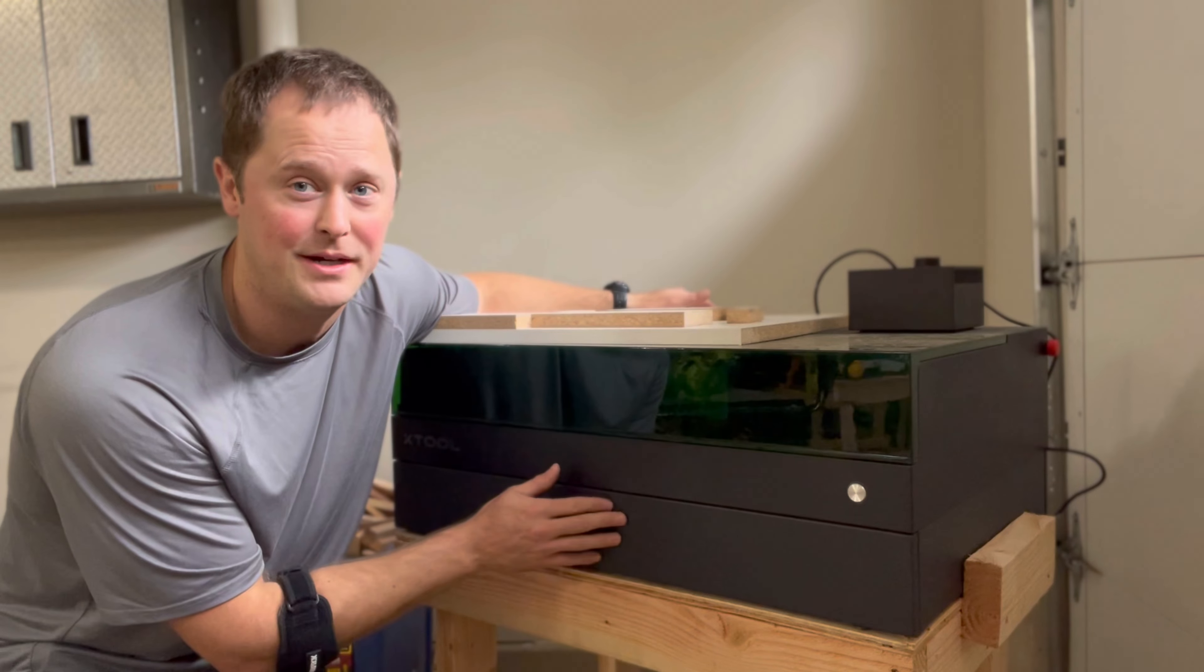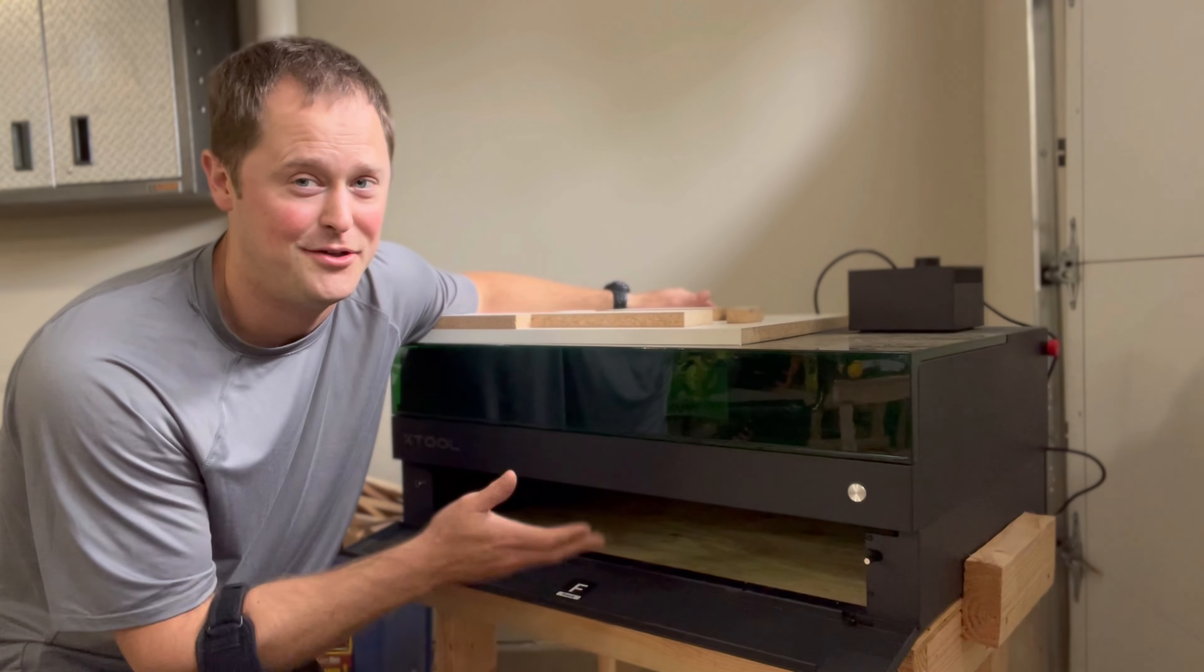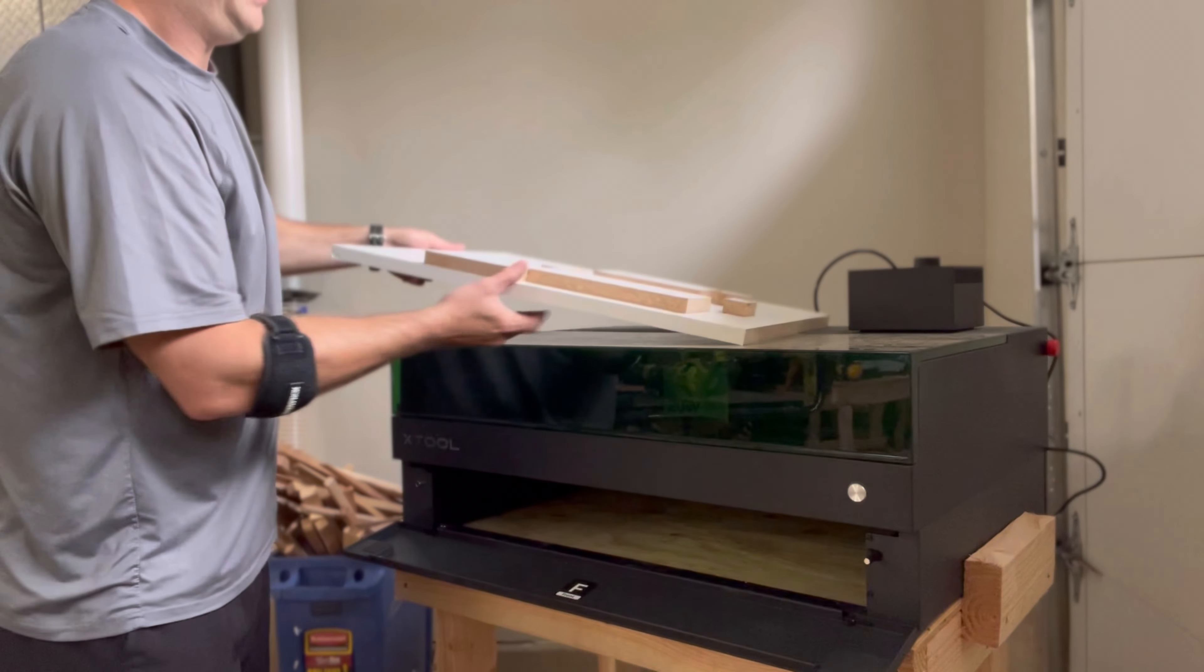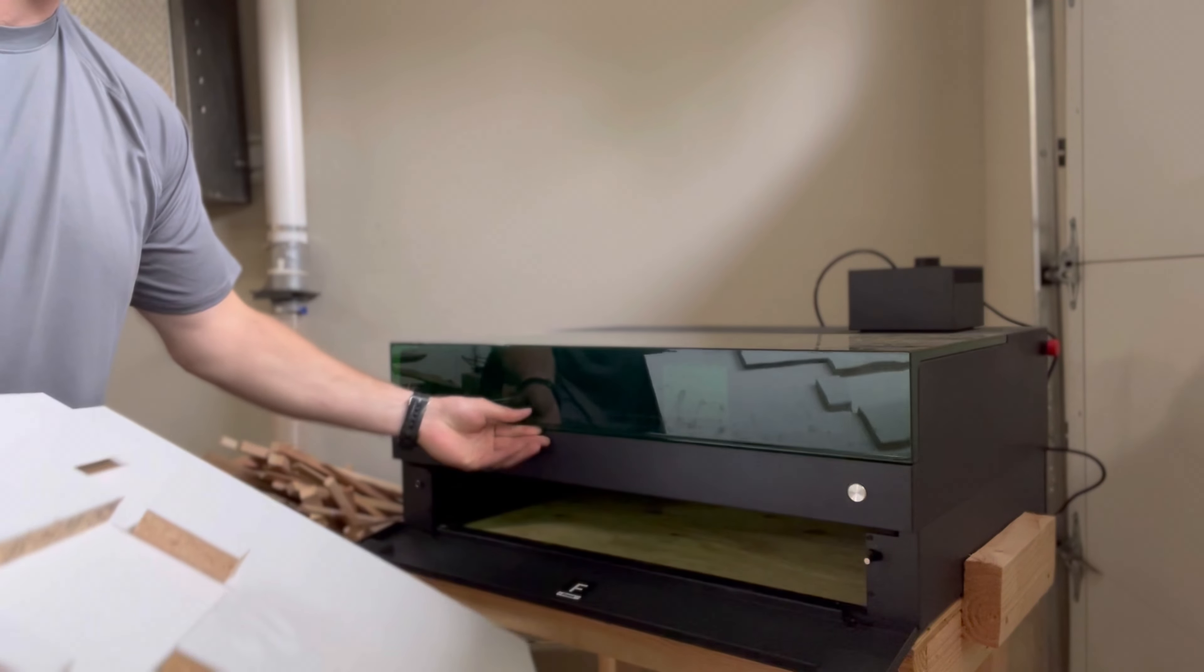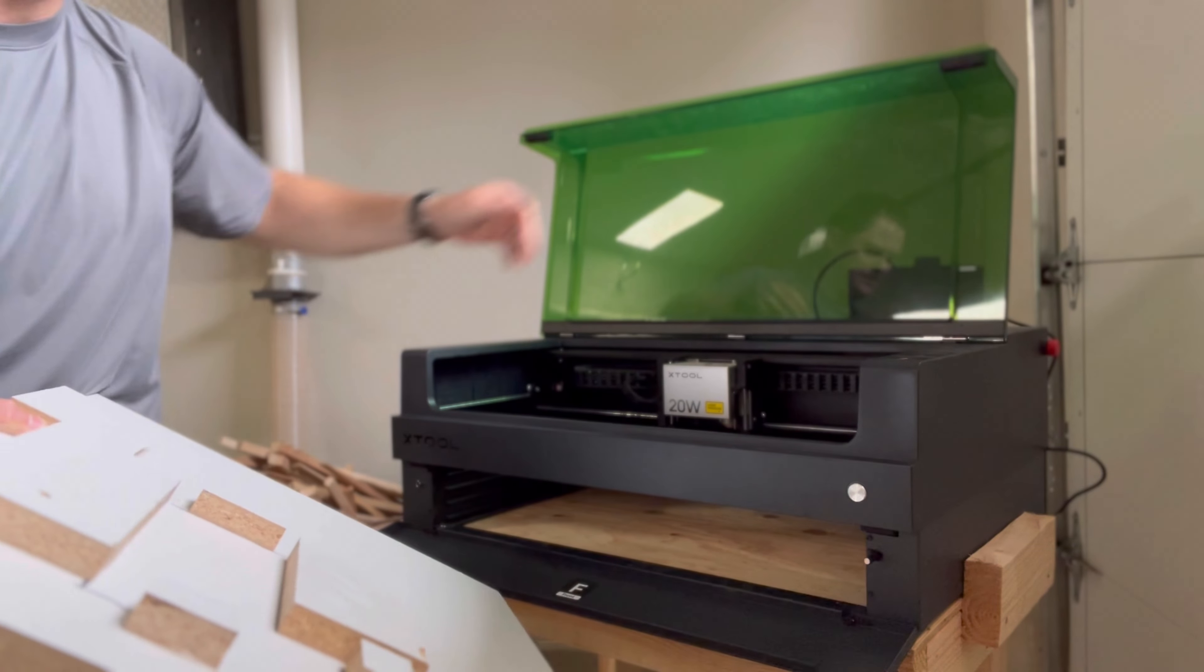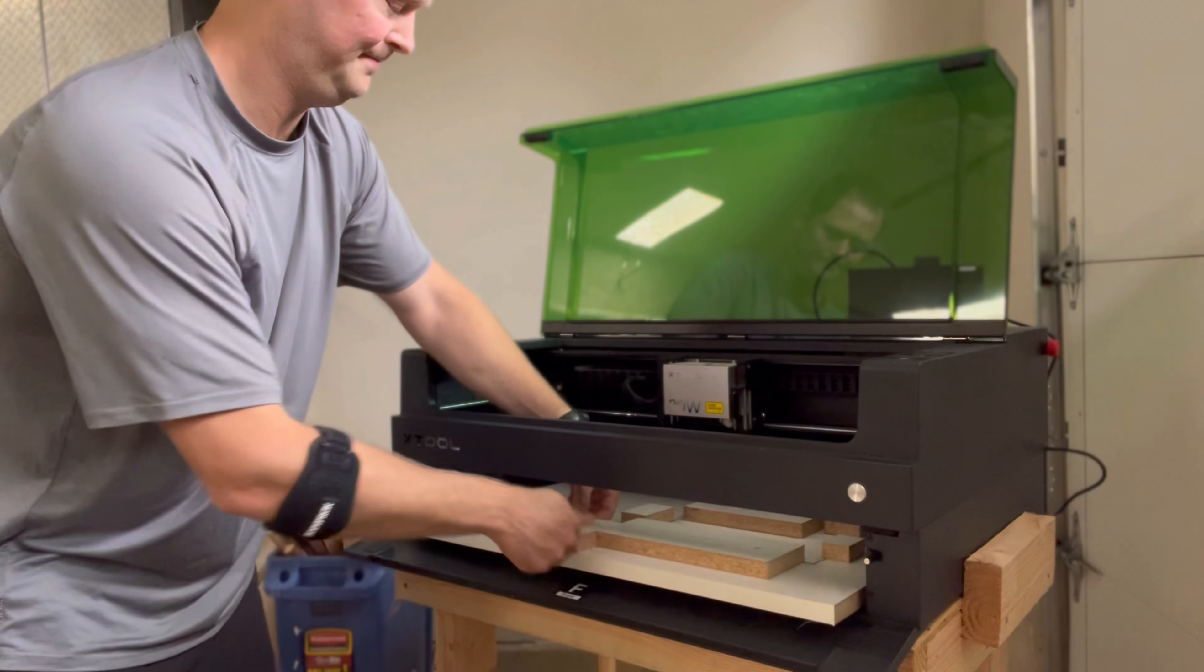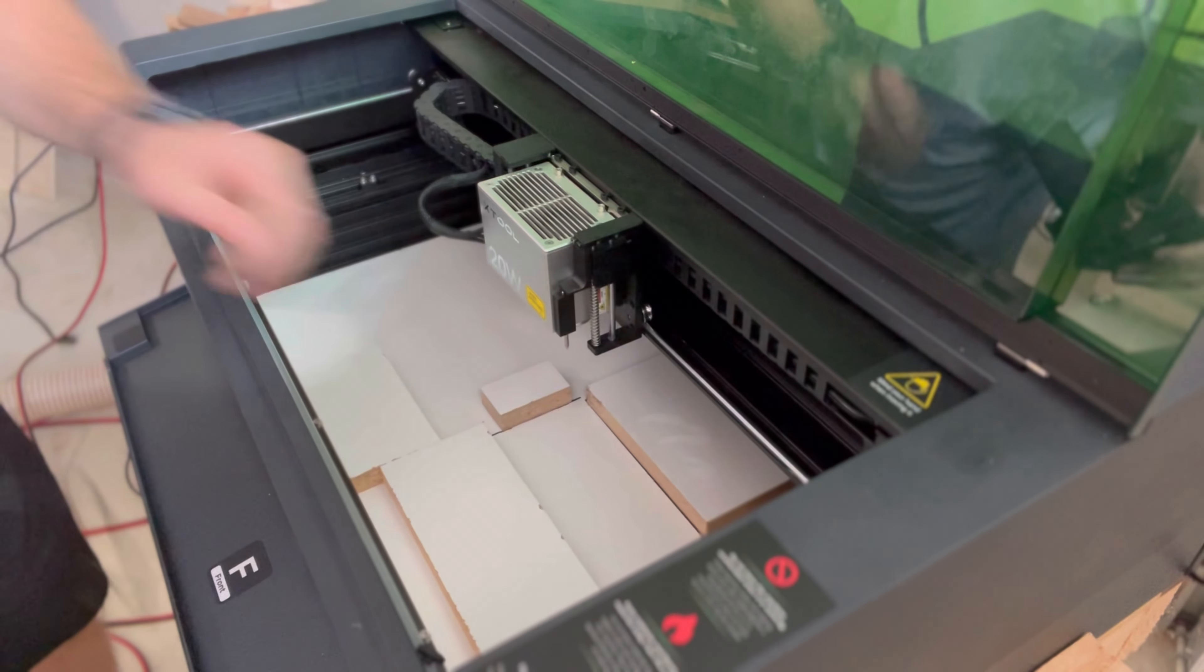First thing you're going to want is the riser base accessory. If you don't have that you're not going to be able to do this with the S1 unfortunately. Take your jig after you've built it, open the lid so you can see, slide it in. There you have it.